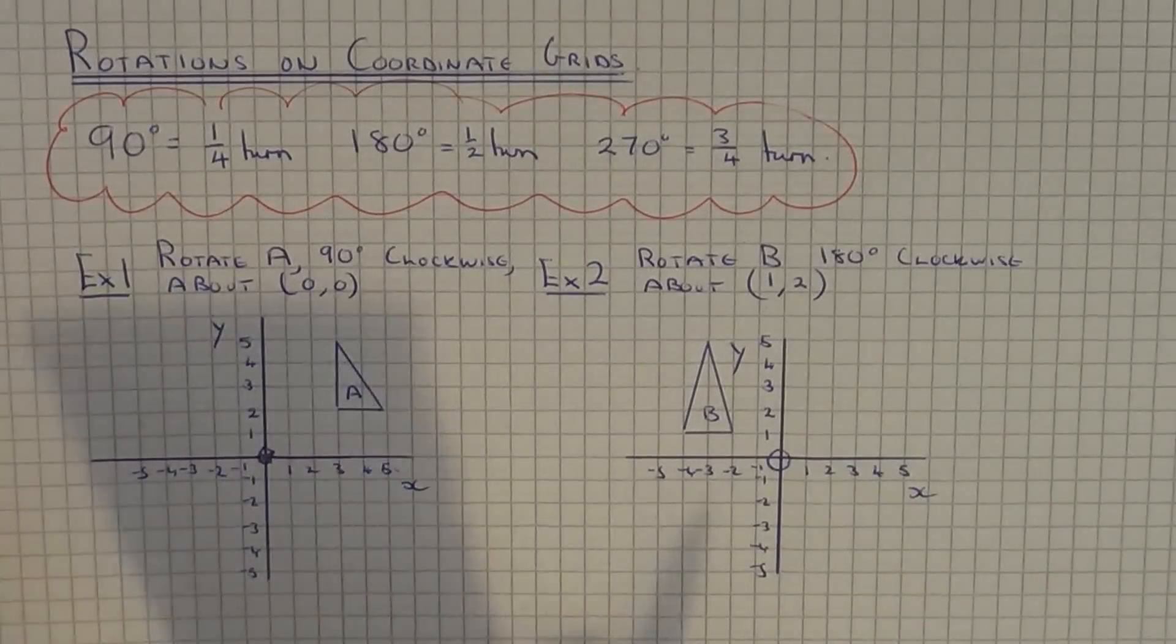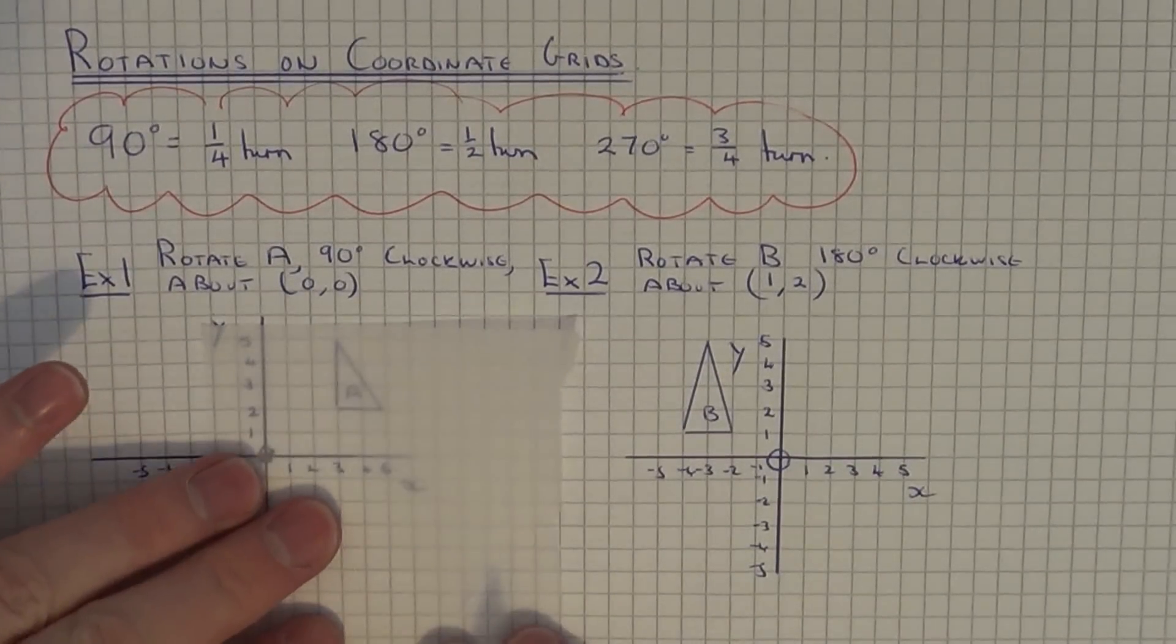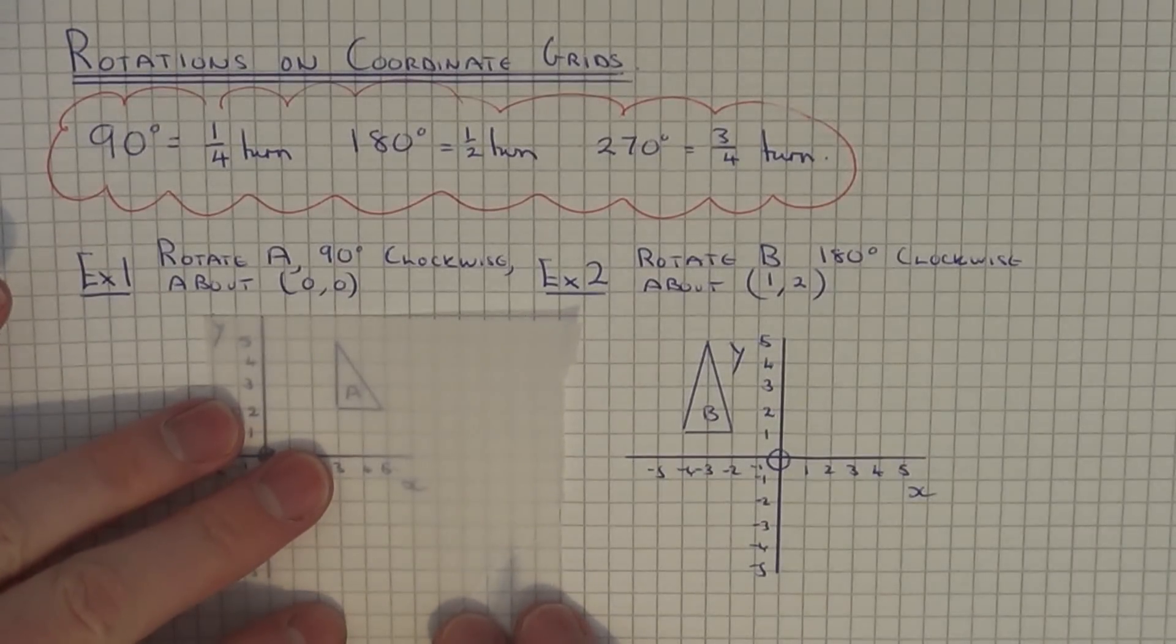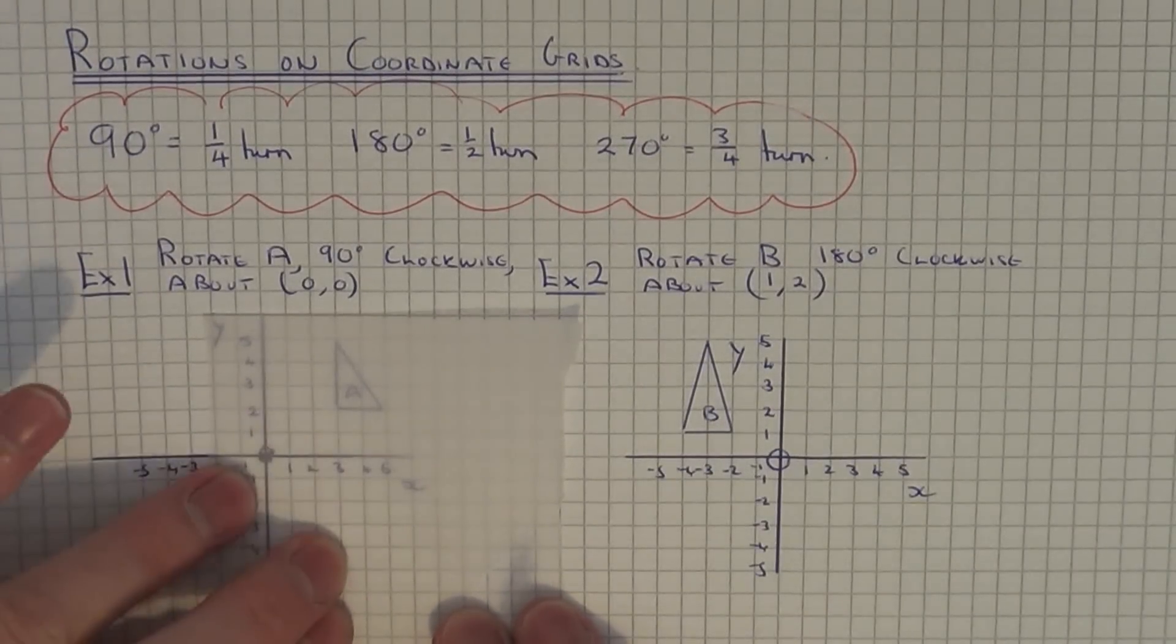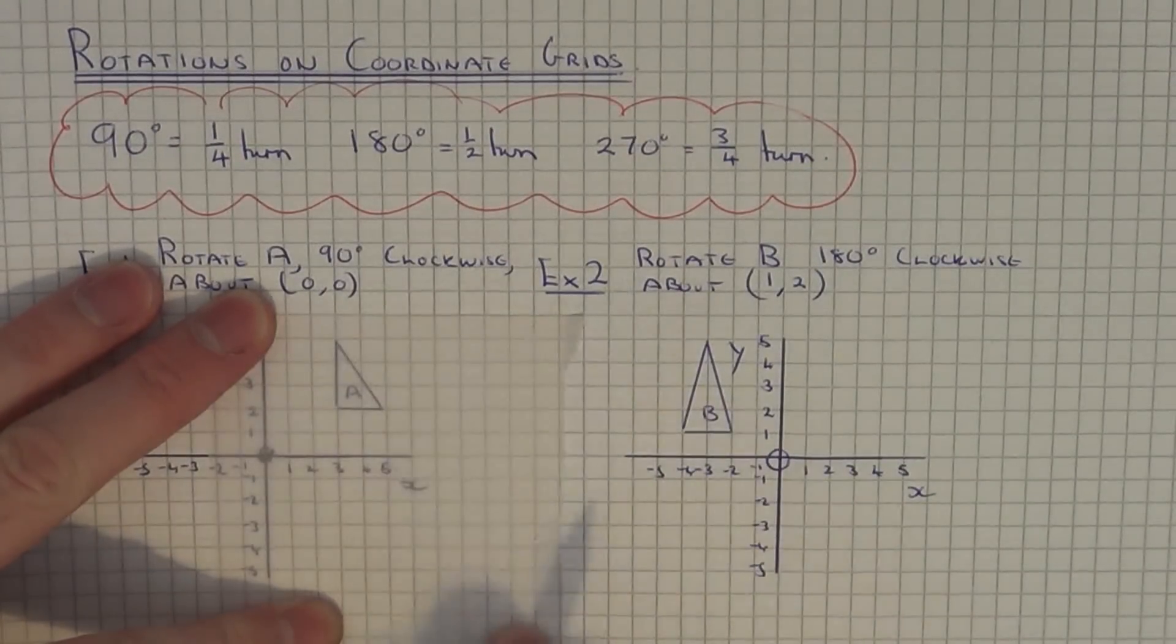The next thing you need is some tracing paper. Trace your shape and make sure you can fit in the centre of rotation. It's a good idea to keep your tracing paper level with the page.